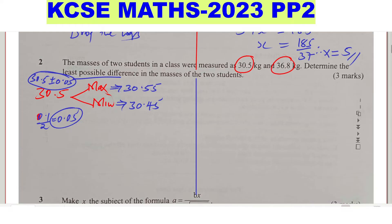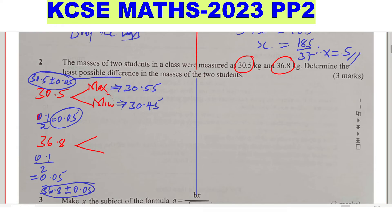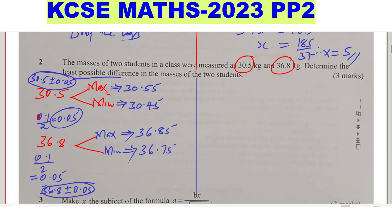What about 36.8? For 36.8, the absolute error will still be 0.05 because the smallest unit of measurement is 0.1 — so 0.1 divided by 2 gives 0.05. To get the limits under which 36.8 lies, we take 36.8 plus or minus 0.05. The maximum of 36.8 is 36.85, and the minimum is 36.75.